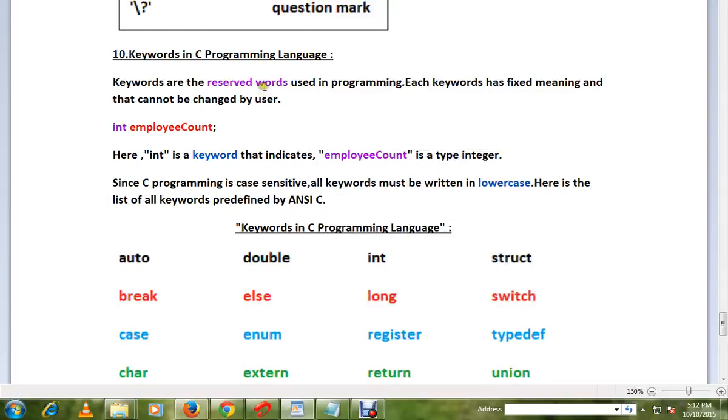Hi friends, in this video I'm going to talk about all keywords in C programming language. Keywords are the reserved words used in programming. Each keyword has fixed meaning and it cannot be changed by the user.